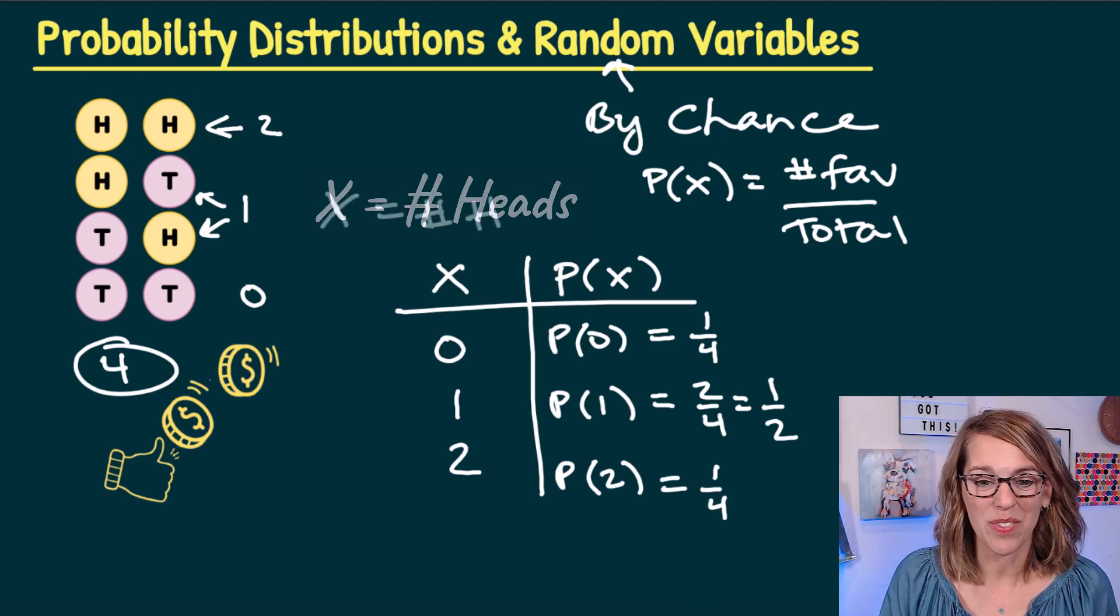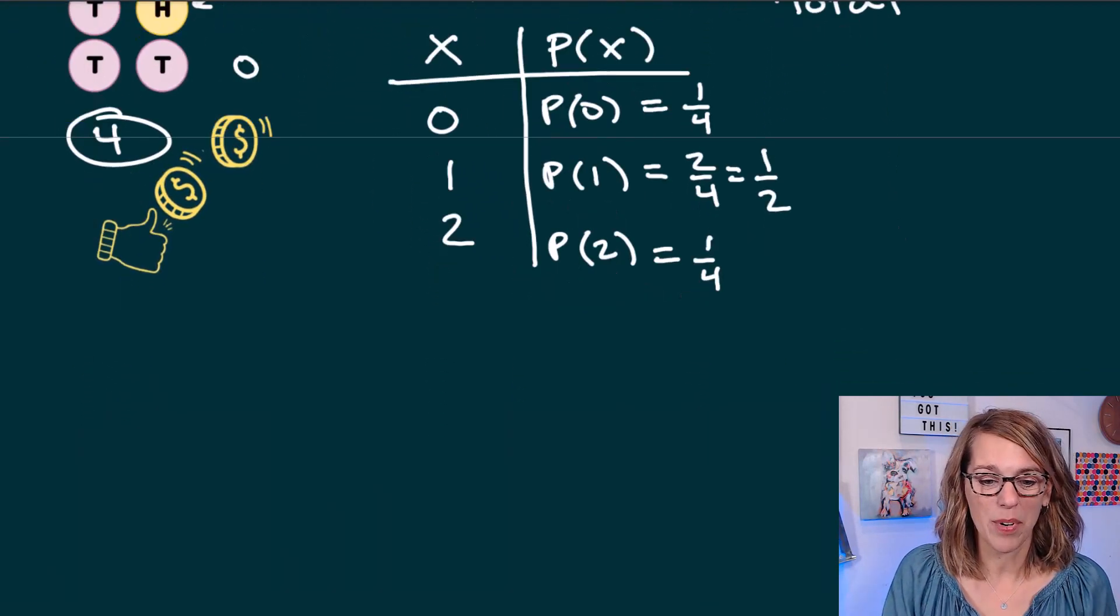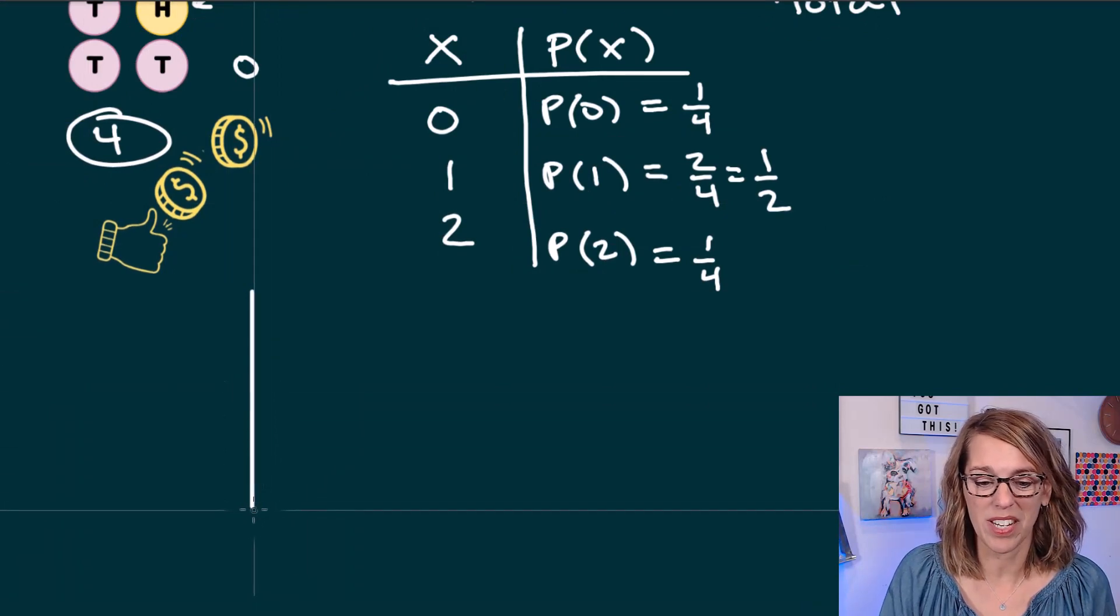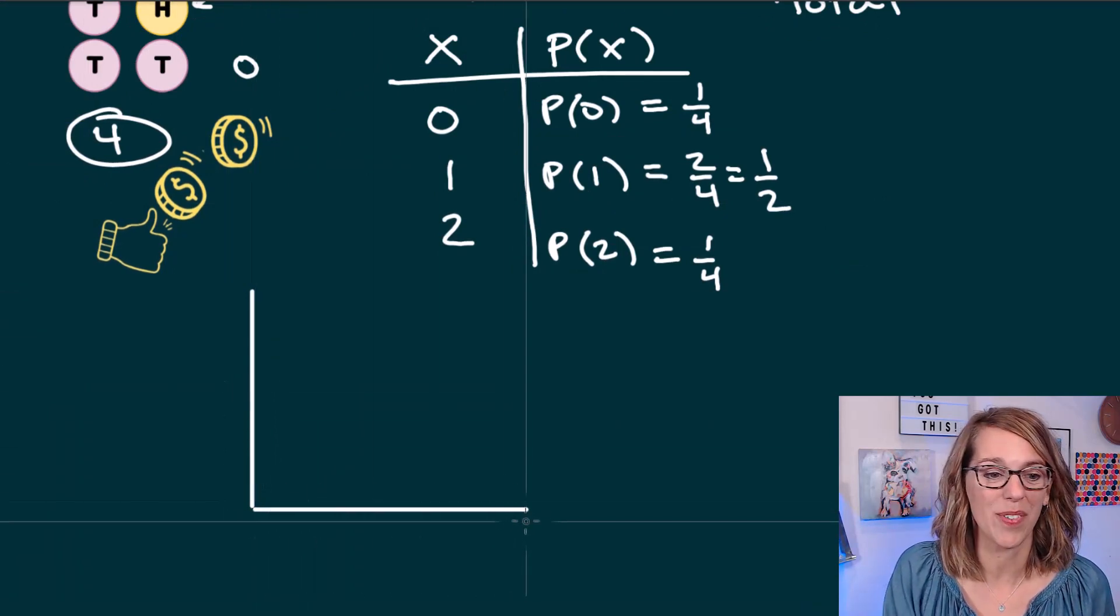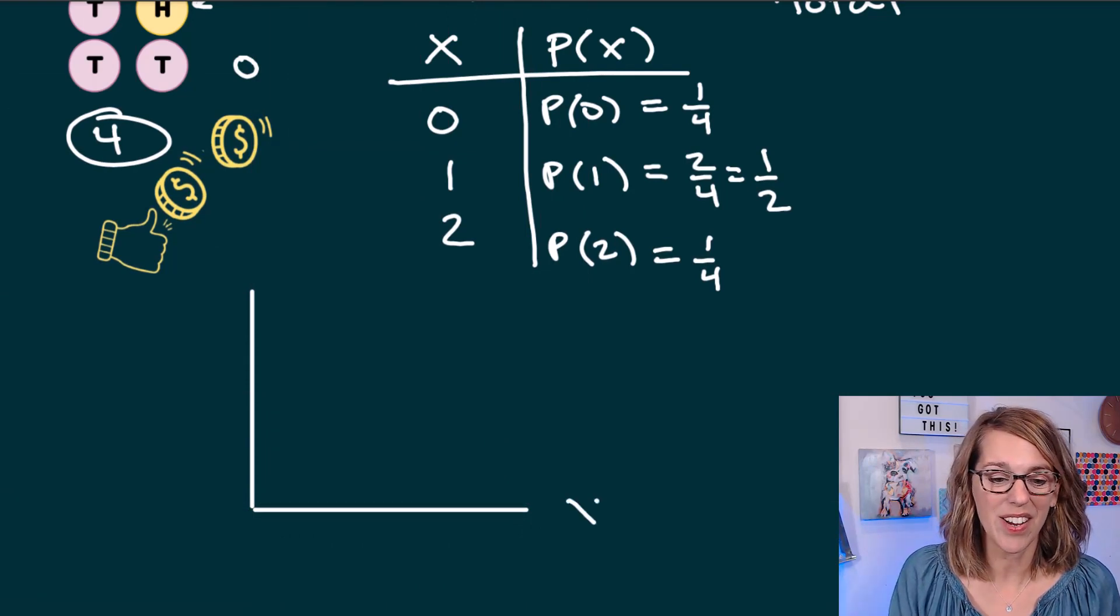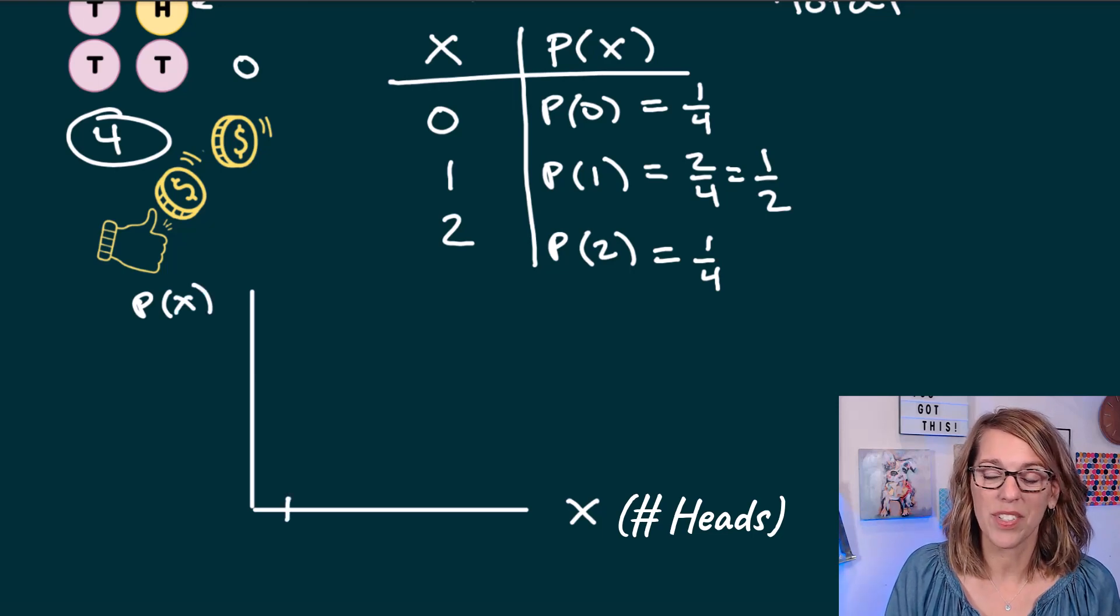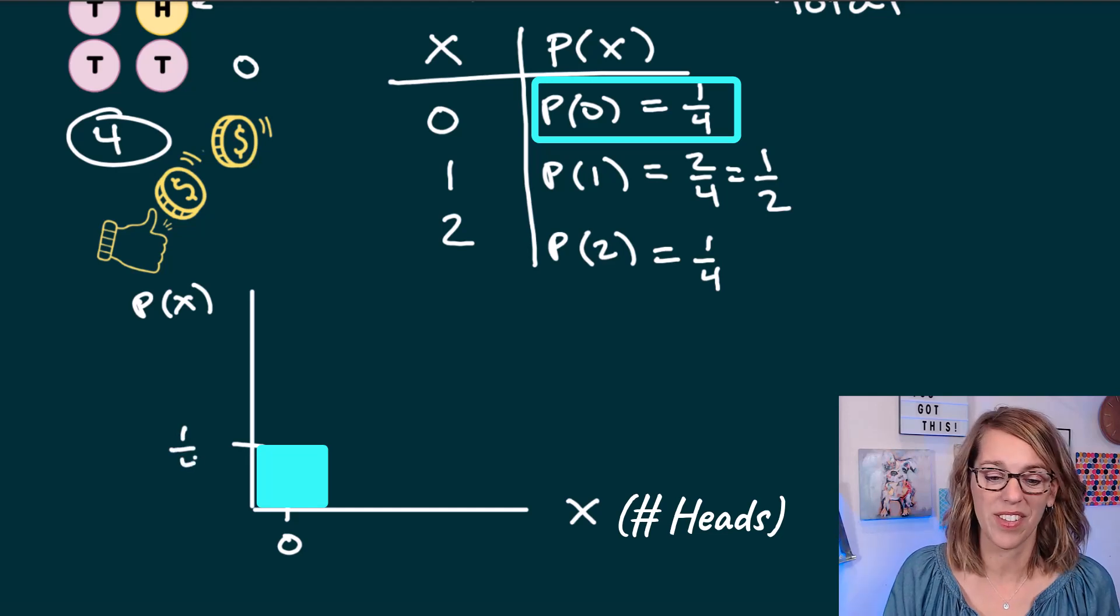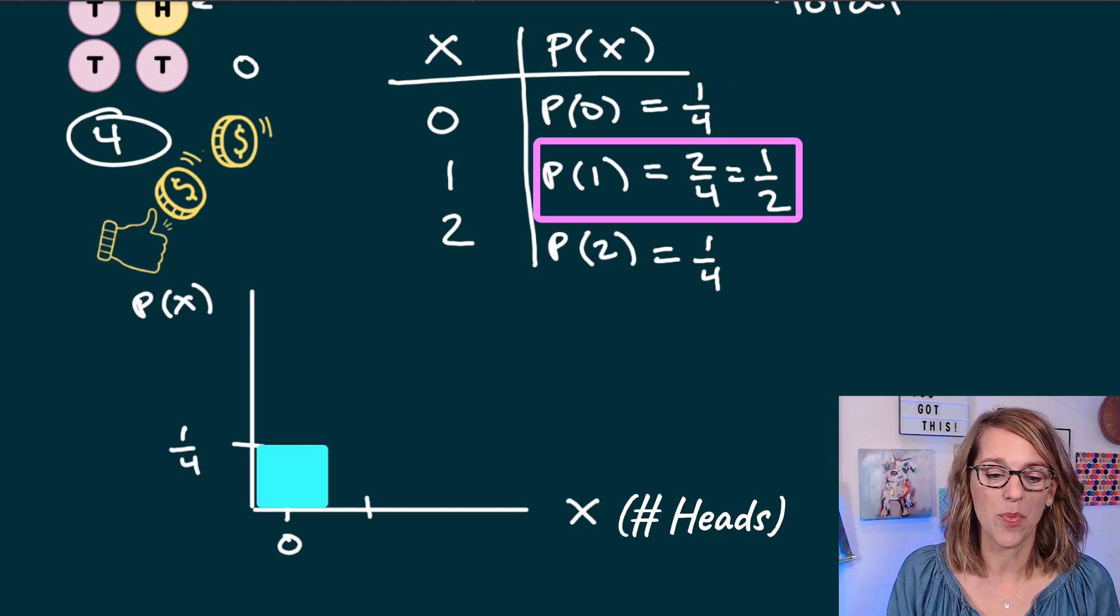Let's put these into a graph. As I put these into my graph, I need a vertical axis for the probabilities and a horizontal axis for the values that X can take on. So X lives here, and my probabilities live here. When X is equal to zero, that height is going to be at a one fourth.